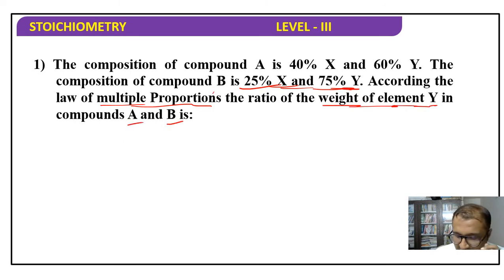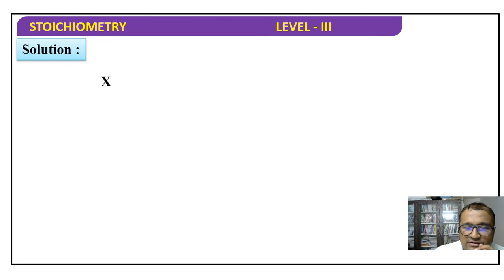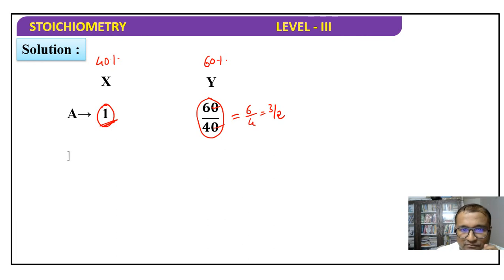Four options are given. First of all we know that if X is 1, then Y will be 60 by 40, because it is 40 percent and 60 percent. So if X is 1, then this will be 60 by 40, which is 6 by 4, means 3 by 2. Similarly for B, the ratio is 25 percent and 75 percent, so if it is 1 then another will be 75 by 25.